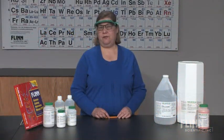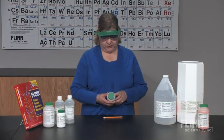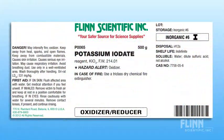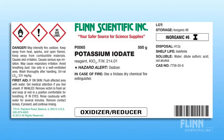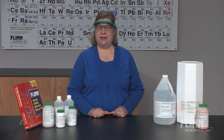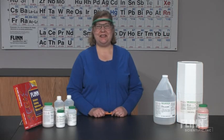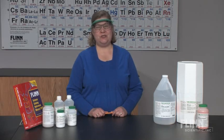The next time you prepare for lab, take a moment to look at the label on the bottle for any chemical you will be using — for example, potassium iodate. It's an oxidizer. See if you can identify the GHS pictogram that will be used in the future to communicate the hazard information for this chemical. The chemical label is an important and often overlooked safety aid. To prevent possible accidents, always take the time to read the name of the chemical on the bottle and review the safety information before using any chemical.